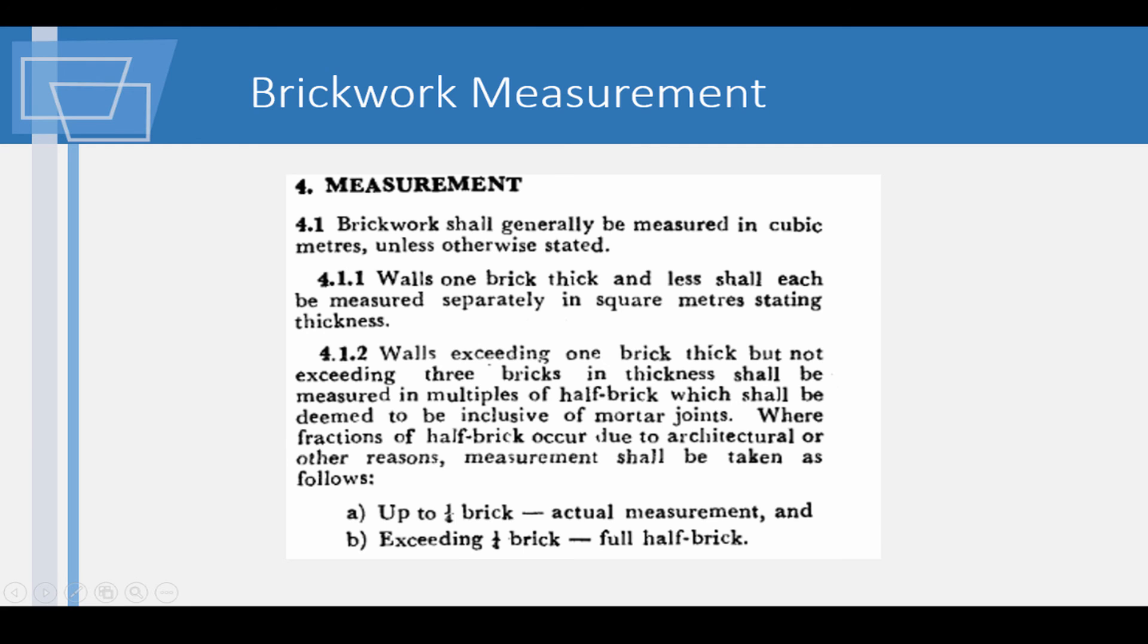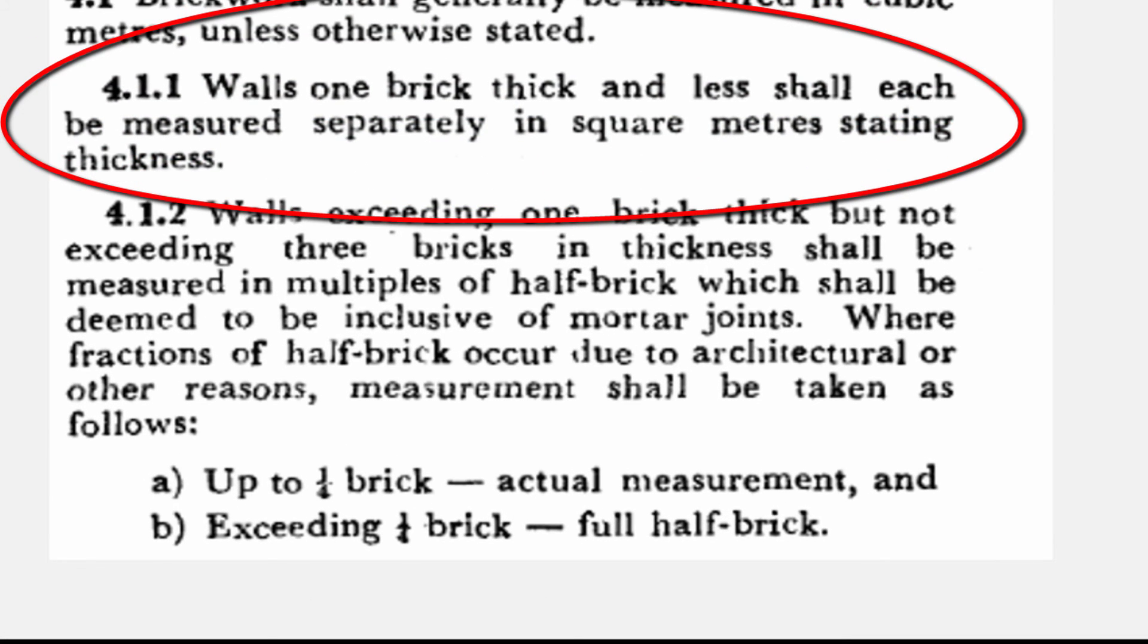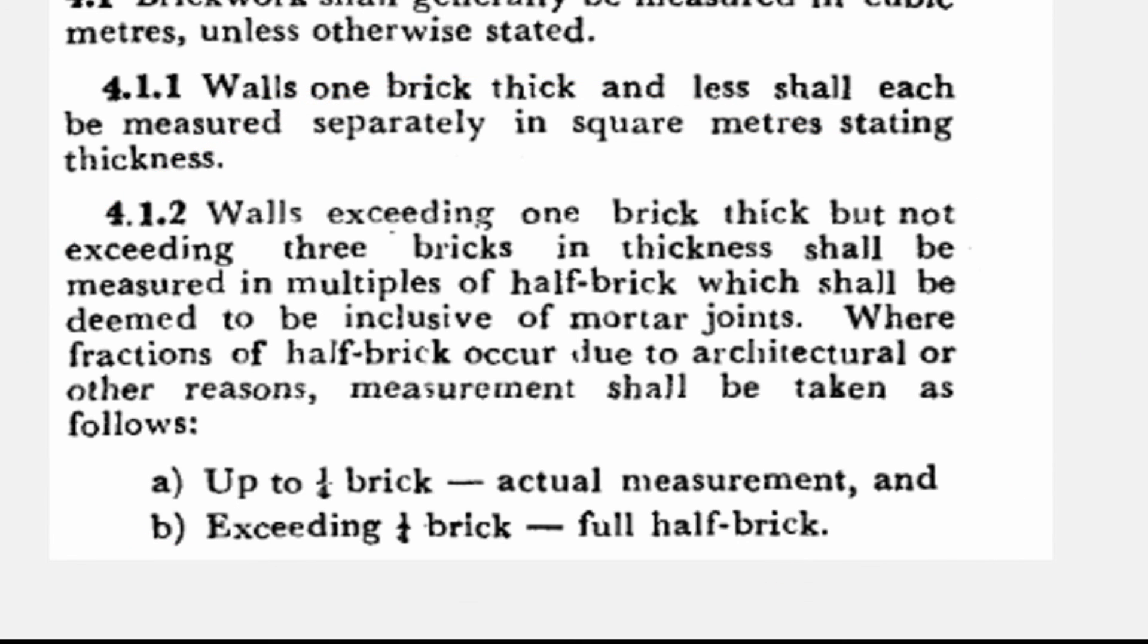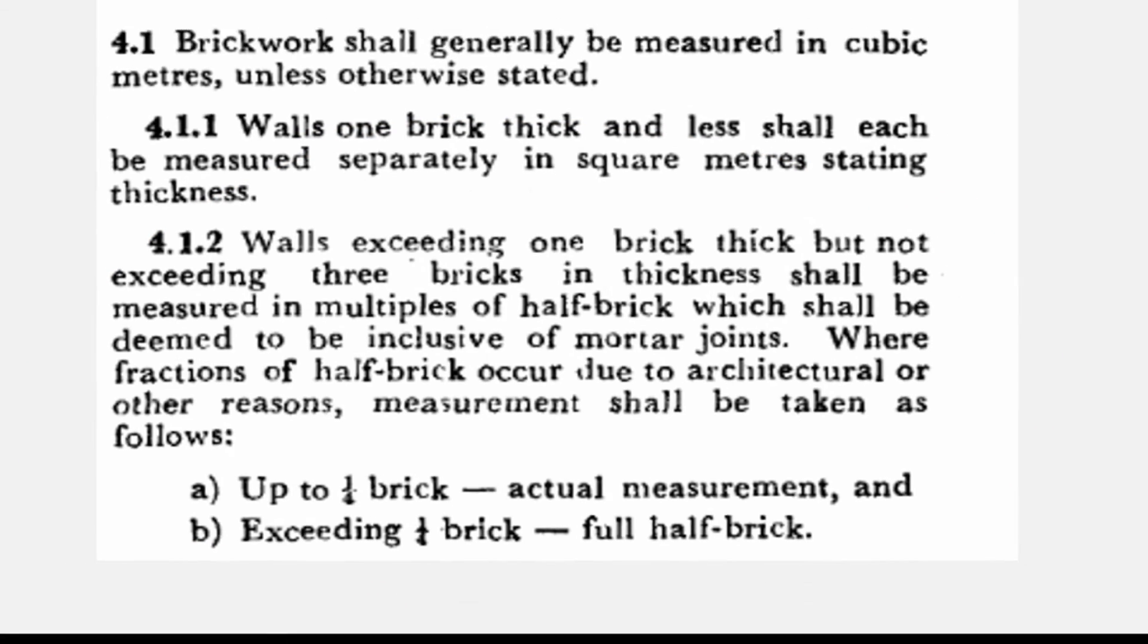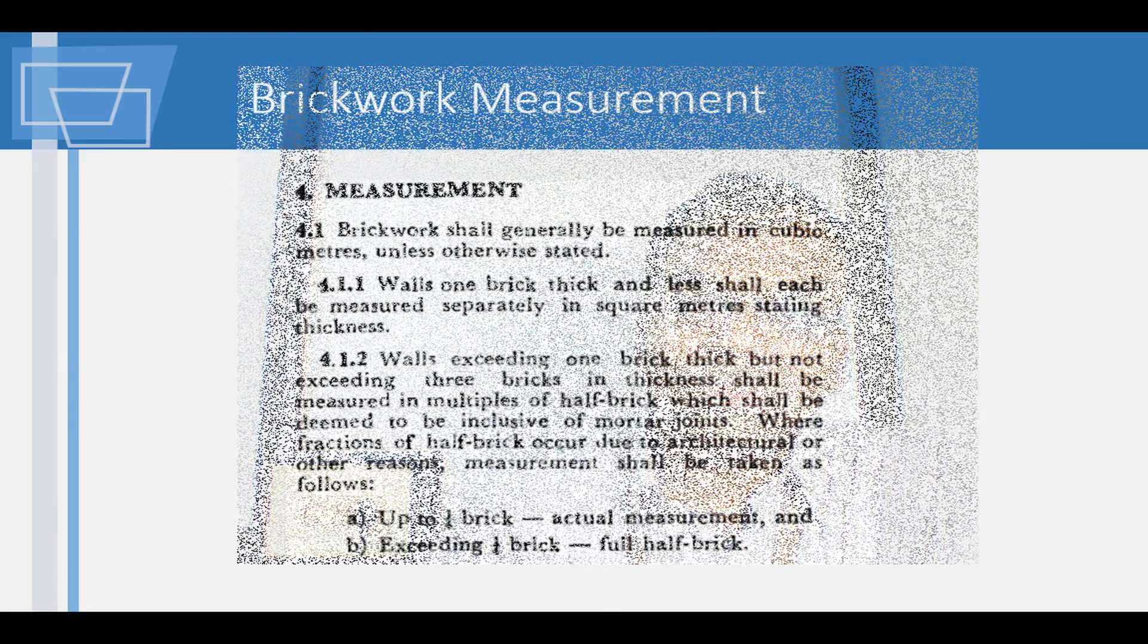The important consideration for the brickwork is walls of one brick thickness or lesser are measured in square meters. All other brickwork is measured in cubic meters. It may be recalled that bricks are ordered in numbers as given in section 2 of this handbook. It may be noted that when walls are over 3 brick thickness only, the mortar joint thickness is accounted for.